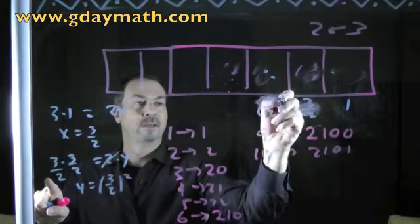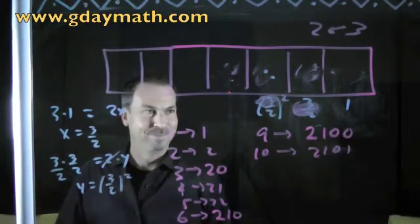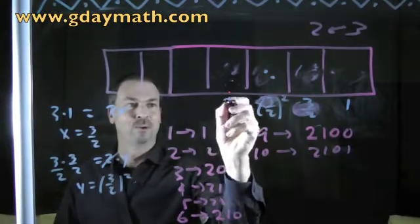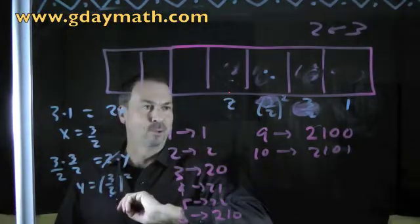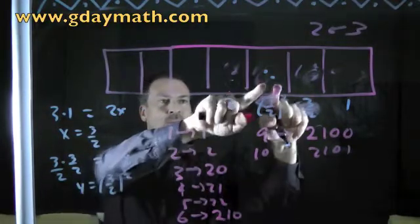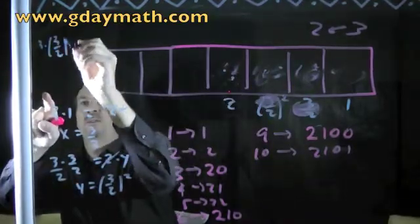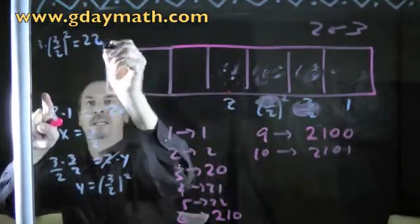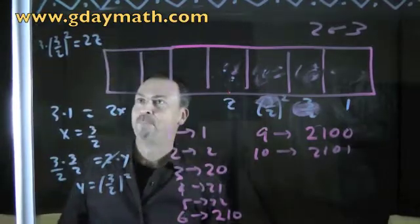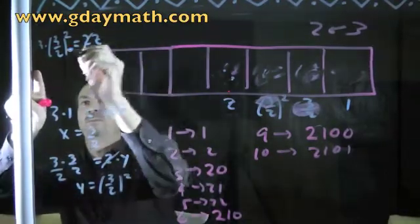Y is three halves squared, y is nine fourths. Aha, now it's coming together. Do one more. Let's call this z. I'm Australian, I'm going to call it z for now. Three of these guys is equivalent to two of these. So three times three halves squared is equivalent to two z's.